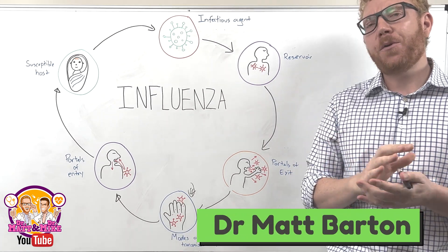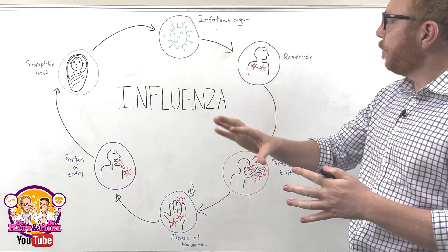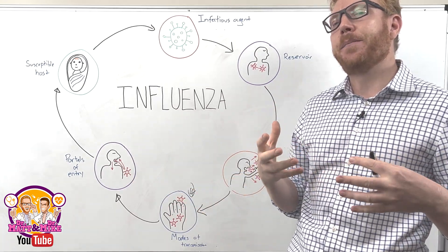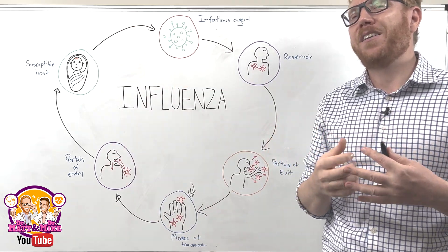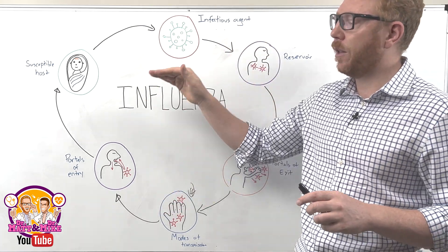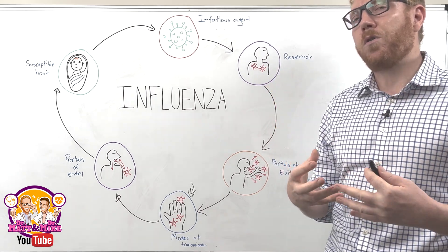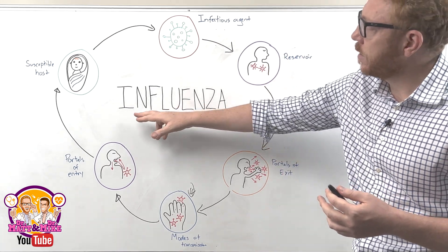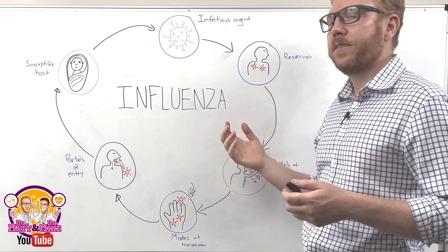Hi everyone, Dr. Matt here. Today we're going to look at the chain of infection. For an infectious agent to be able to move from one host to another, certain conditions need to be in place — this is essentially the chain of infection. Understanding it is very important as a health professional, because if we can break the chain at particular points, we can help stop the spread of the infectious agent and control the disease. In this video, I'm going to explain the chain of infection in the context of influenza and some ways we can break the chain to help control this disease.